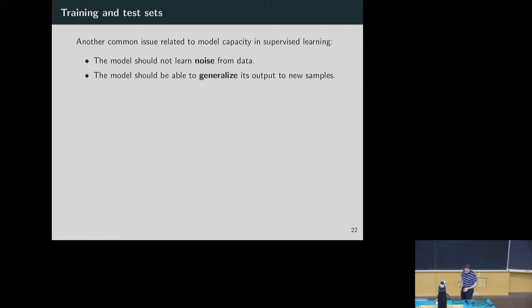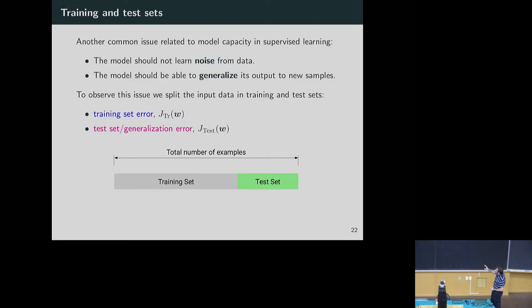In order to avoid over-learning and decide the best capacity for our problem, we usually split the data into two sets: a training set and a test set. I split my data, train on the training set which gives me a loss function value, but if I really want to understand generalization power, I have to look at the test set. This is the first step to think about when implementing a machine learning system.